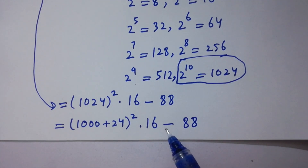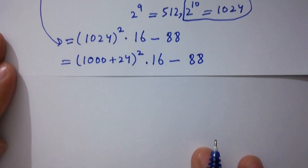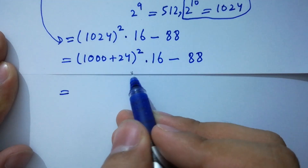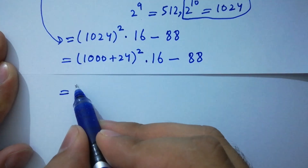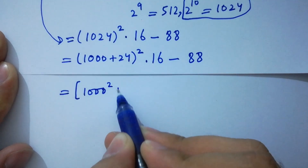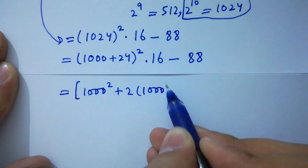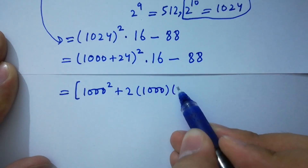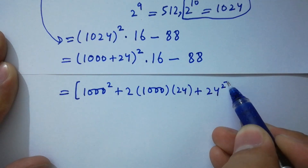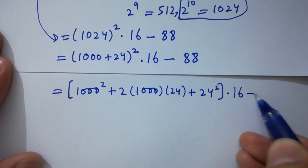Apply the formula of (a plus b) whole square, which is equal to a squared plus 2ab plus b squared. We have here 1000 squared plus 2 times 1000 times 24 plus 24 squared, all times 16, minus 88.